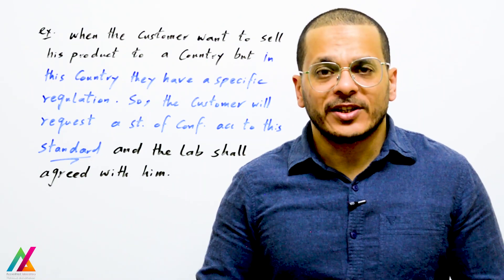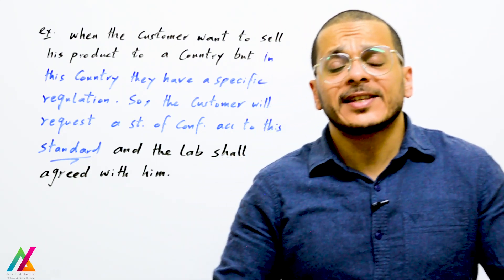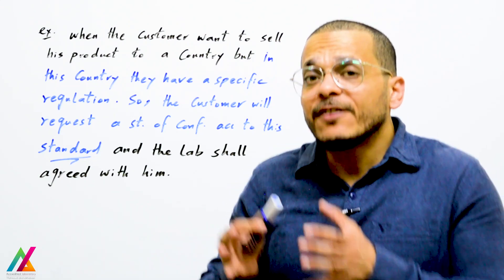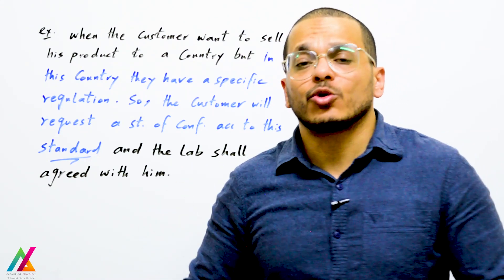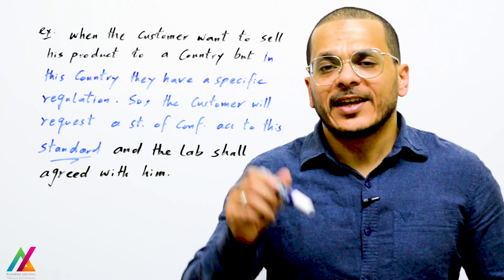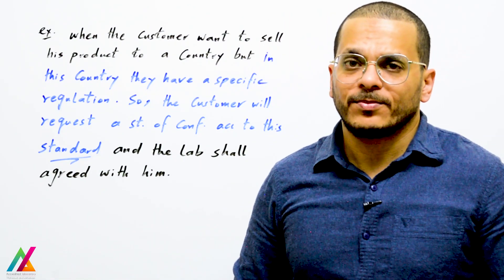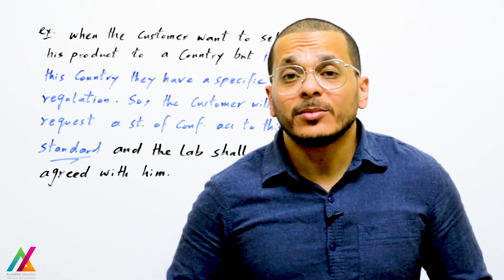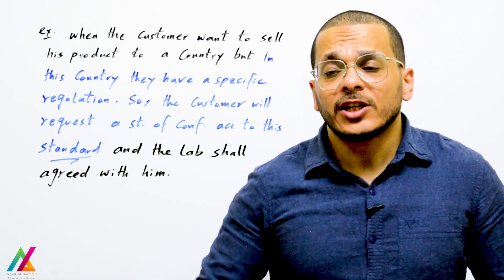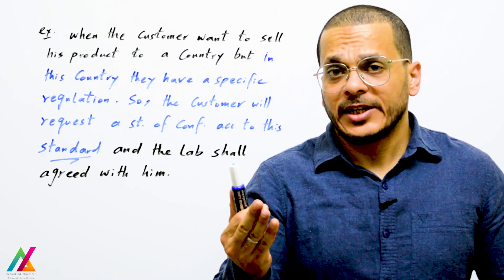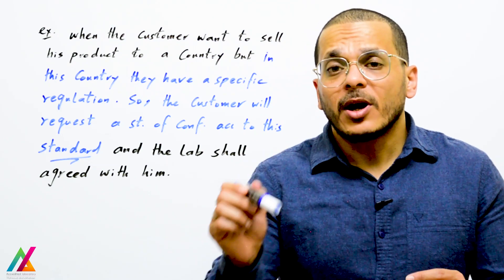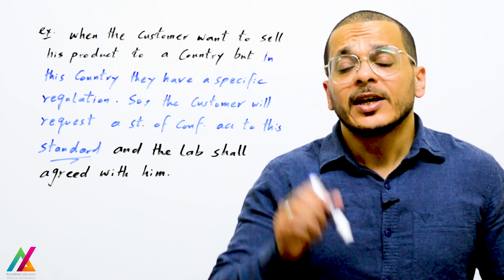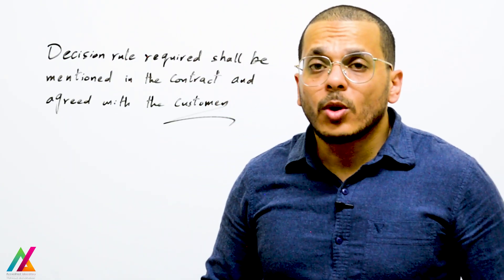For example, when a customer wants to sell a product to a country that follows a specific regulation such as a European standard, the customer will request from the lab a statement of conformity — acceptance or rejection of samples according to that standard. The lab shall agree, and the decision rule shall be clearly defined, communicated, and agreed with the customer. The decision rule is a new point added to this edition: after the analyst analyzes the sample, the result plus or minus measurement uncertainty is sent to management, who makes the acceptance or rejection decision. The type of decision rule required shall also be mentioned in the contract.